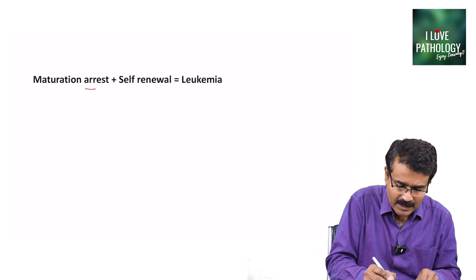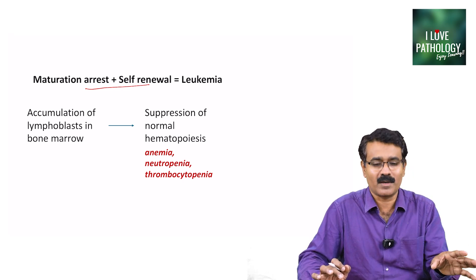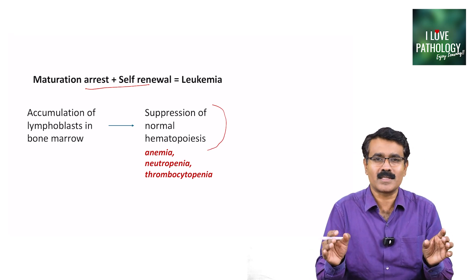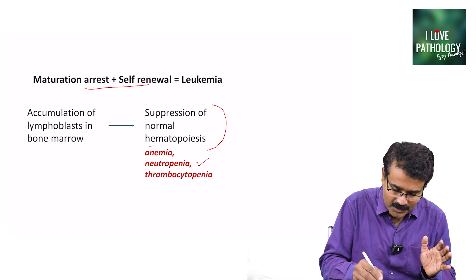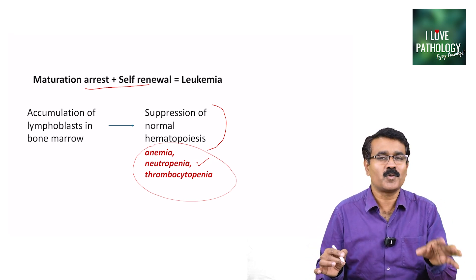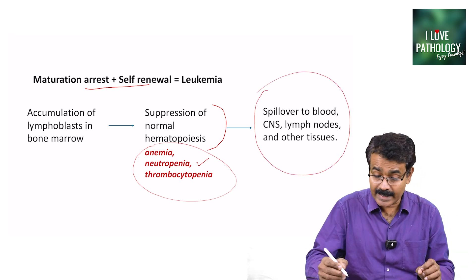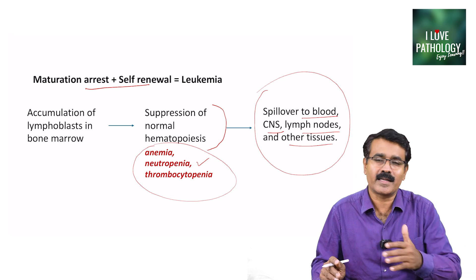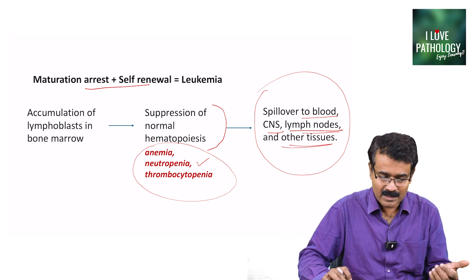Maturation arrest plus self-renewal results in leukemia. There is accumulation of lymphoblasts in the bone marrow resulting in suppression of normal hematopoiesis. Once normal hematopoiesis is suppressed, there can be anemia, neutropenia, and thrombocytopenia — all clinical manifestations arise because of these three things. The leukemic cells can also spill over to the blood, CNS, lymph nodes, and other tissues. It begins in the bone marrow, then spills into the blood, and can extend into the CNS, lymph nodes, or any other tissues.